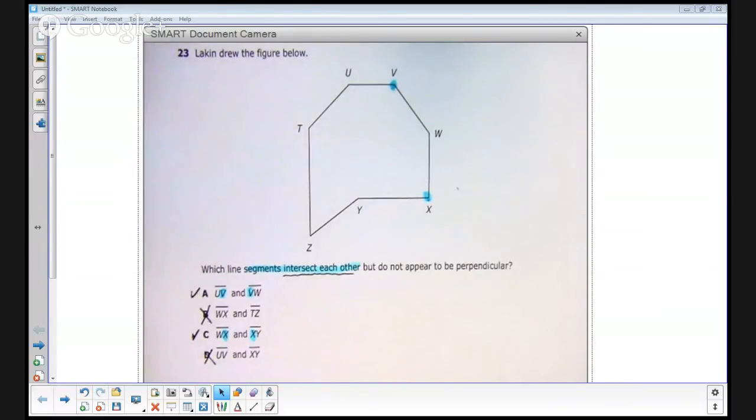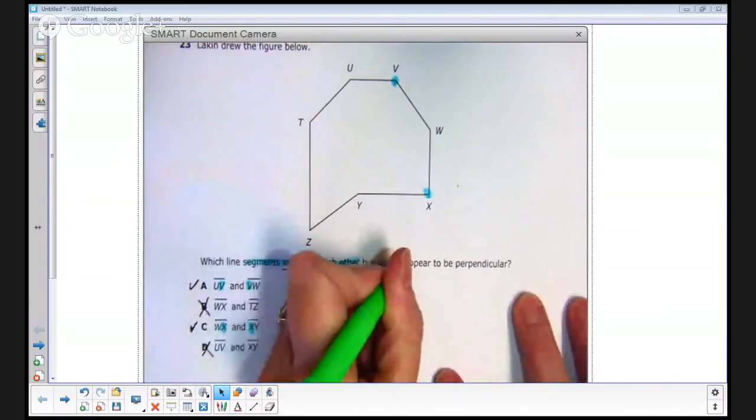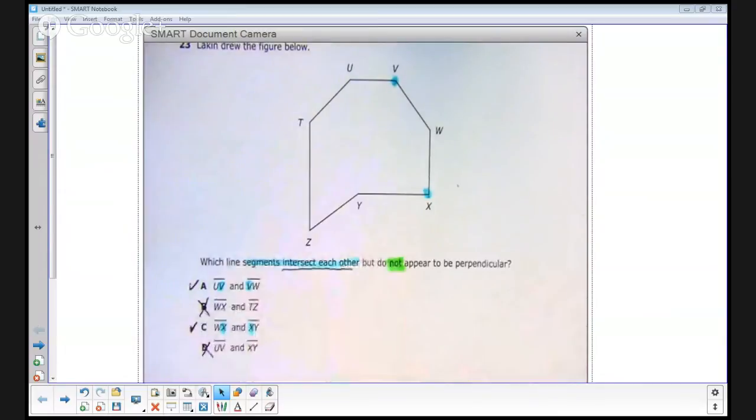So we've got two possible answers. So what do we choose? Well, clearly the one that was chosen most often by those who missed it were those who did not see the word not. It's a really good idea to have your students highlight the word not anytime it appears in a test question.